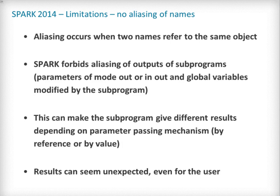There are two reasons to forbid aliasing in Spark. First, it makes verification more difficult, as it requires taking into account the fact that updates to two variables with different names may in fact update the same object. Then, results may seem unexpected from a user's point of view. When parameters are aliased, the results of a subprogram call may depend on compiler-specific treatment, like parameter-passing mechanisms. Moreover, most of the time, the possibility of aliasing was not taken into account by the programmer.